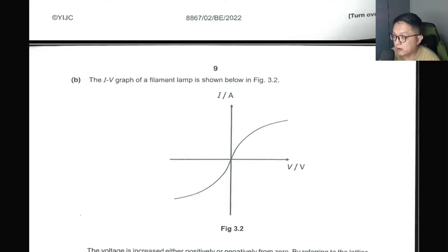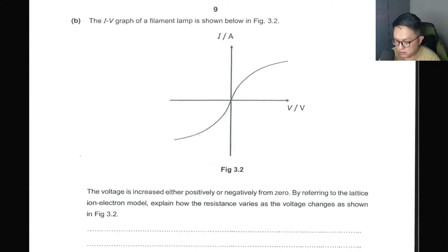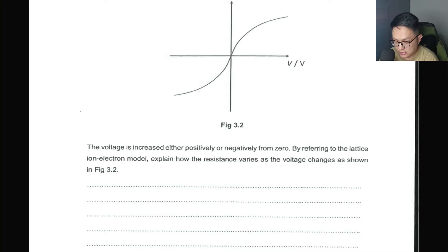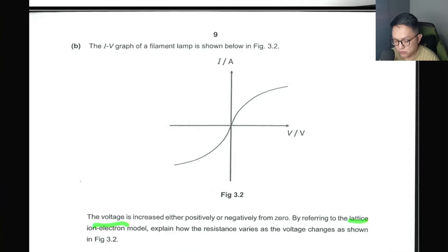Next, we have the IV graph of a filament lamp. You're expected to detail what happens as the voltage is increased either positively or negatively from zero, by referring to the lattice ion electron model. So this is the key phrase: the lattice electron model. Explain how resistance varies as voltage changes. You don't have to do the negative part — just focus on one section.